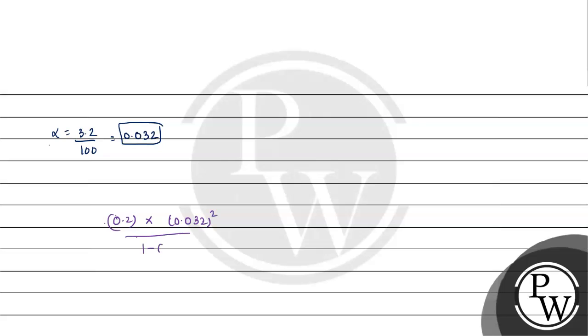If we solve this, we get 0.2 times 0.032 times 0.032 in the numerator. In the denominator, we have 1 minus 0.032, which equals 0.968.